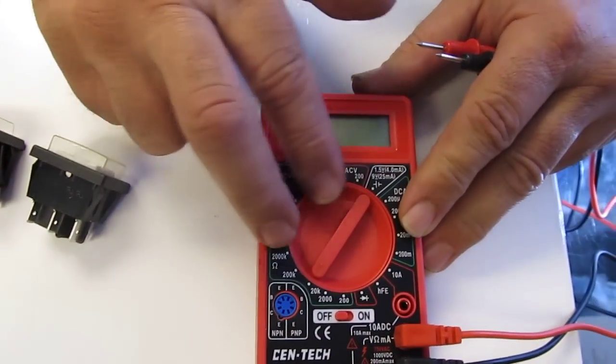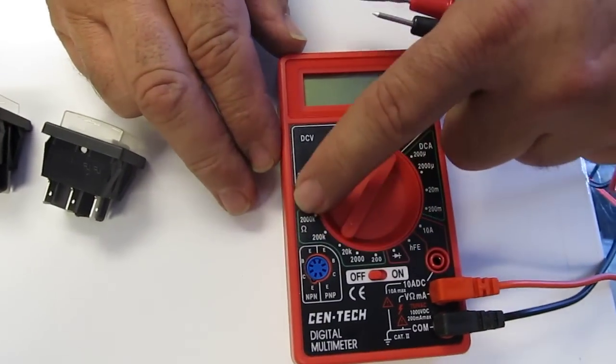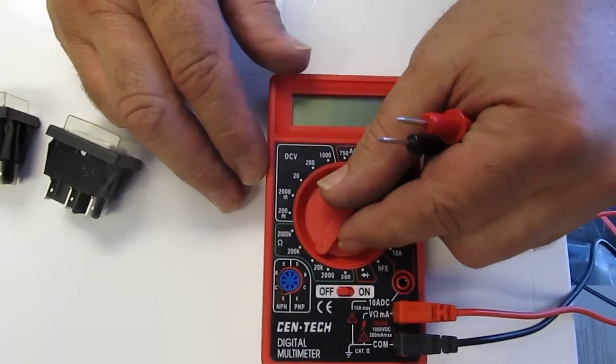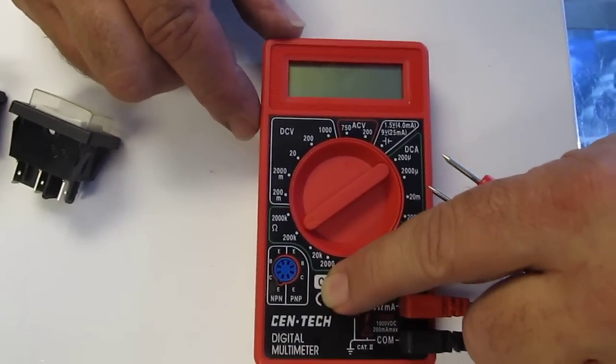We're going to use the 20,000 ohm setting. You can use the continuity setting or any of these settings, but the easiest one to read is 20,000 and up. Matter of fact, we're going to go to 200,000. That way we get a nice clean zero for on position.